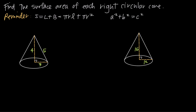In this video, we're talking about how to find the surface area of a right circular cone. When we talk about a right circular cone, we start with a cone, which is this three-dimensional object. And because it's a circular cone, we know that the base of the cone is a circle. And because it's a right circular cone, we know that the angle between the altitude here, its height, and the base of the cone is a 90 degree angle. So we're dealing with right circular cones, and we want to find the surface area of a figure like this one.